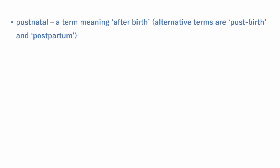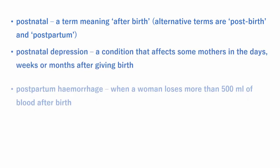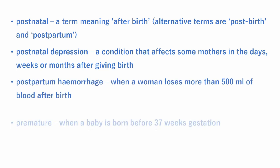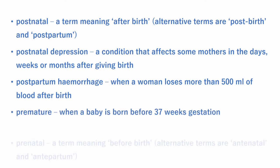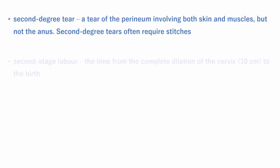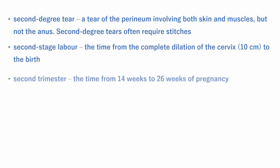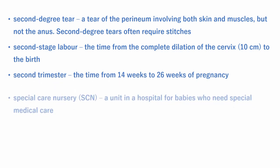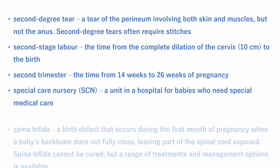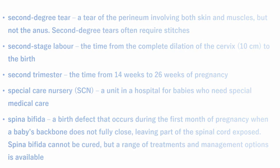Postnatal means after birth. Postnatal depression is a condition that affects some mothers in the days, weeks, or months after giving birth. Postpartum hemorrhage is when a woman loses more than 500 milliliters of blood after birth. Premature refers to babies born before 37 weeks of gestation. Prenatal means before birth. Second degree tear is a tear of the perineum involving both skin and muscles but not the anus; these often require stitches. Second stage of labor is from complete dilation of the cervix at 10 centimeters to the birth of the baby. Second trimester is the time from 14 weeks to 26 weeks of pregnancy. Spina bifida is a birth defect occurring during the first month of pregnancy when a baby's backbone does not fully close, leaving part of the spinal cord exposed. Spina bifida cannot be cured but a range of treatments and management options are available.